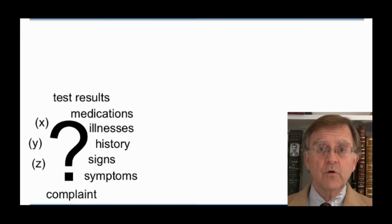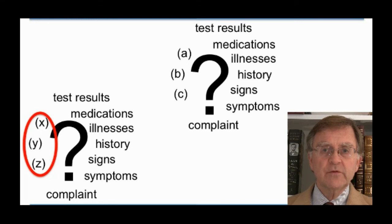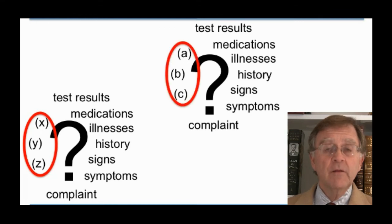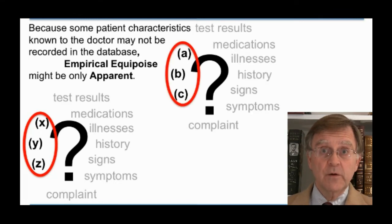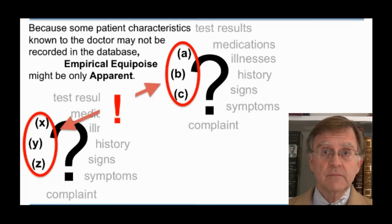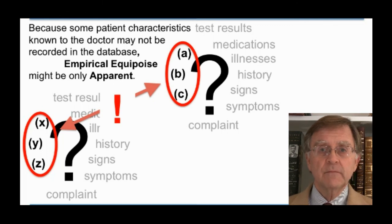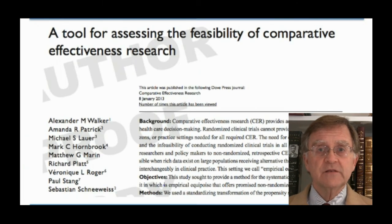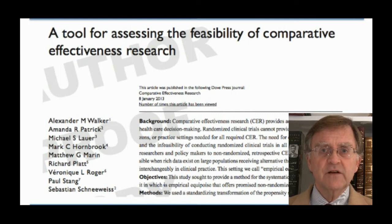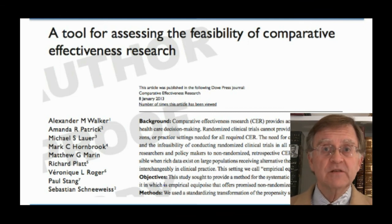But patients are more than the totality of their recorded characteristics. Two patients who appear to be similar with respect to their recorded characteristics may yet differ with respect to their unrecorded characteristics. Proper research requires that all important covariates be measured and accounted for. Keepers of large medical databases can easily apply our tool to identify situations of apparent empirical equipoise. We can know when comparative effectiveness research might be successful and when we should avoid it.